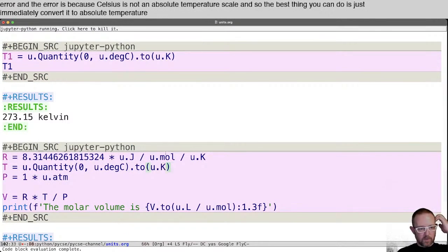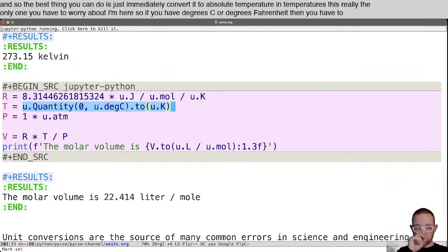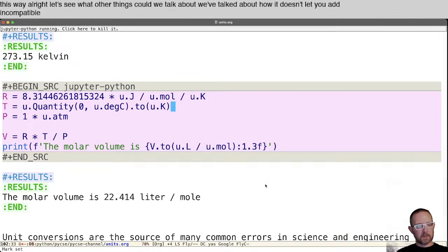And temperature is the really the only one you have to worry about here. So if you have degrees C or degrees Fahrenheit, then you have to construct it this way. All right, let's see what other things could we talk about. We've talked about how it doesn't let you add incompatible units. It will combine units. So you're free to multiply and divide units.